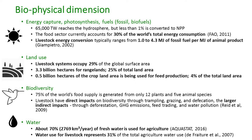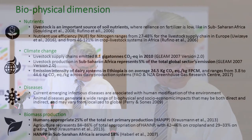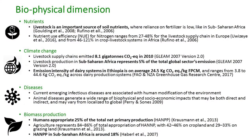Water: about 70% of total freshwater use is for agriculture, and about 31% of that is for livestock. On nutrients, livestock is an important source — particularly in mixed farming systems in Africa. Nutrient use efficiency for nitrogen ranges from 27% to 48%, and may be higher in crop-livestock systems because of recycling.